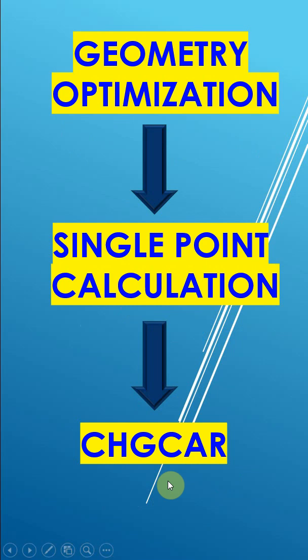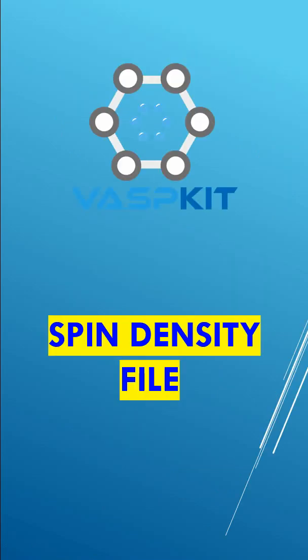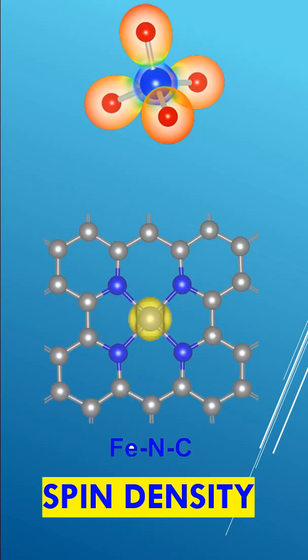First, do geometry optimization, then do single point energy calculation, and you will get the CHGCAR file. From this CHGCAR file, you can use VASPkit to get the spin density file. Then use VESTA to plot the spin density as I shown here.